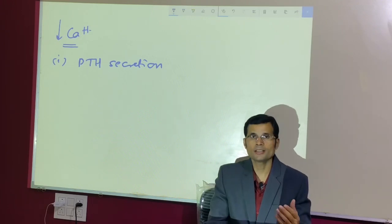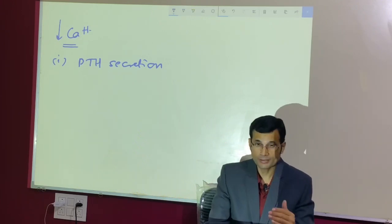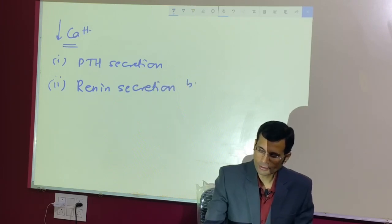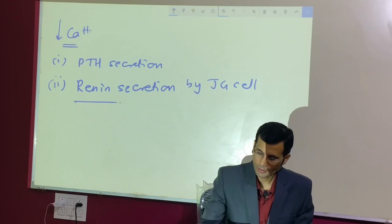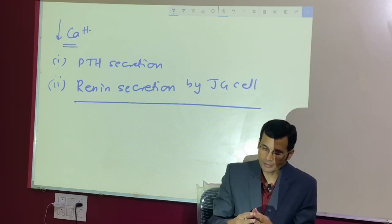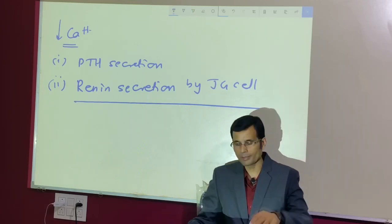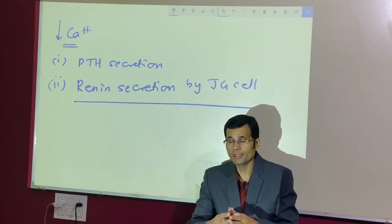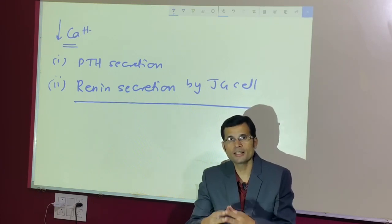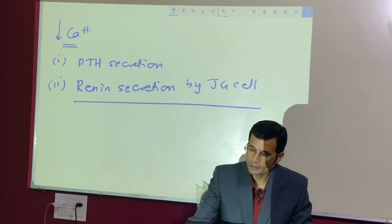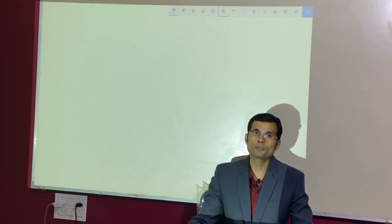The second exception is renin secretion by the JG cells. This also occurs when there is decreased intracellular calcium. When there is decreased blood volume and decreased blood pressure, renin is secreted, and the signal for this is in the form of decreased intracellular calcium. These are the transports across the membrane — the vesicular transports.